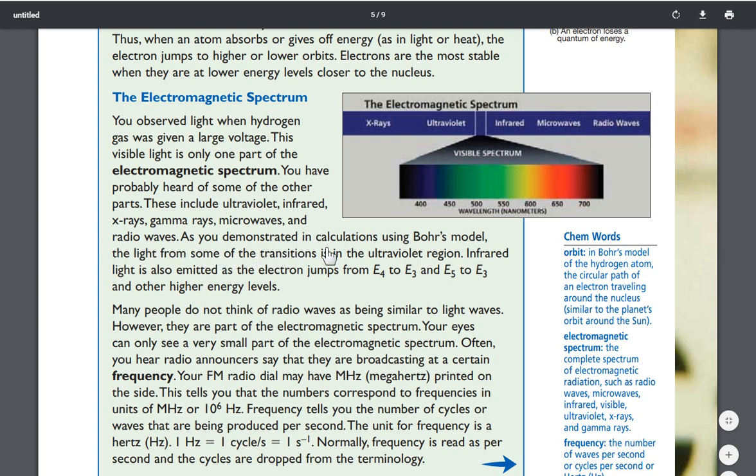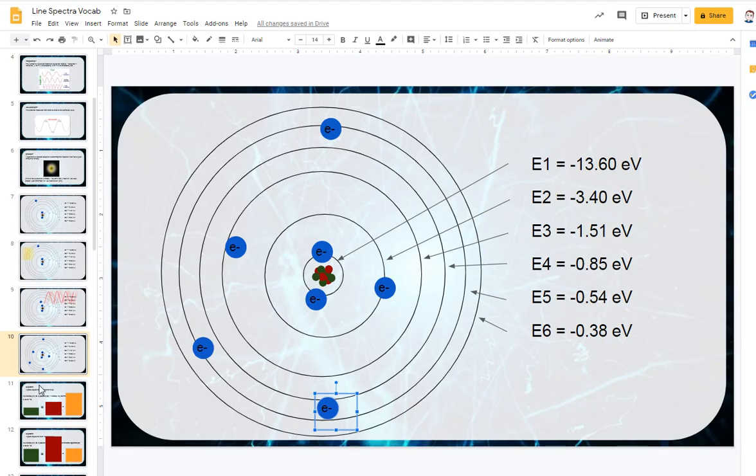As you demonstrated in calculations using Bohr's model, the light from some of the transitions is in the ultraviolet region. Infrared light is also emitted as the electron jumps from E4 to E3 and E5 to E3 and other high energy levels. Okay, that's these levels right here. The electrons are jumping back and forth between E3, E4, and E5.